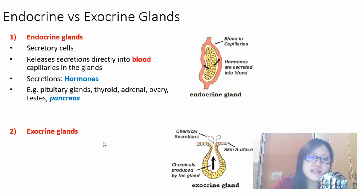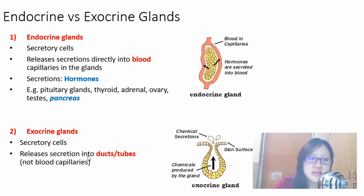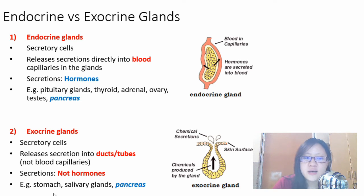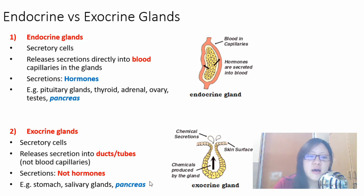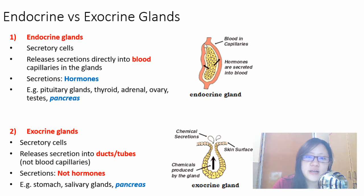Exocrine glands are also composed of secretory cells, but instead of releasing secretions directly into blood, they are released into ducts or tubes and directed to a particular location. For example, your stomach releases secretions of enzymes into your stomach. Salivary glands secrete saliva into the mouth cavity. The pancreas does this too — we will see how later on. So endocrine glands secrete into blood, whereas exocrine glands secrete via ducts.